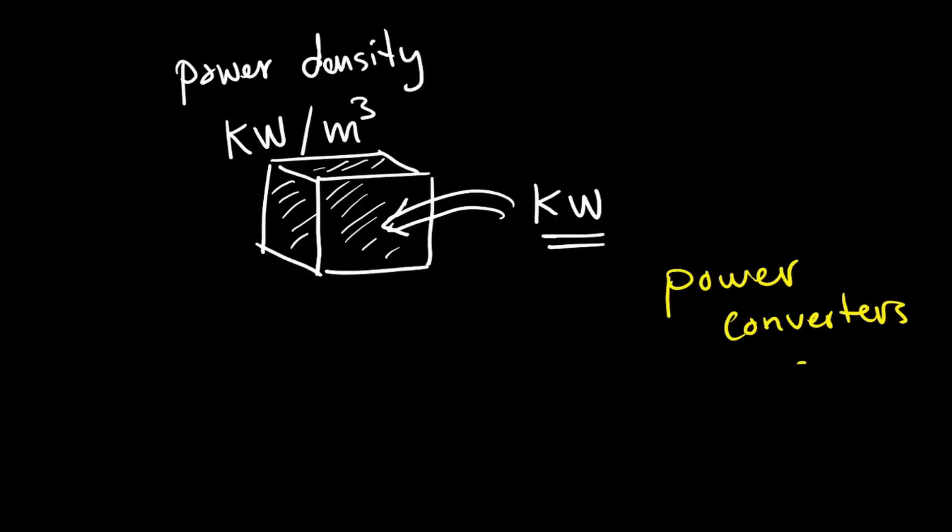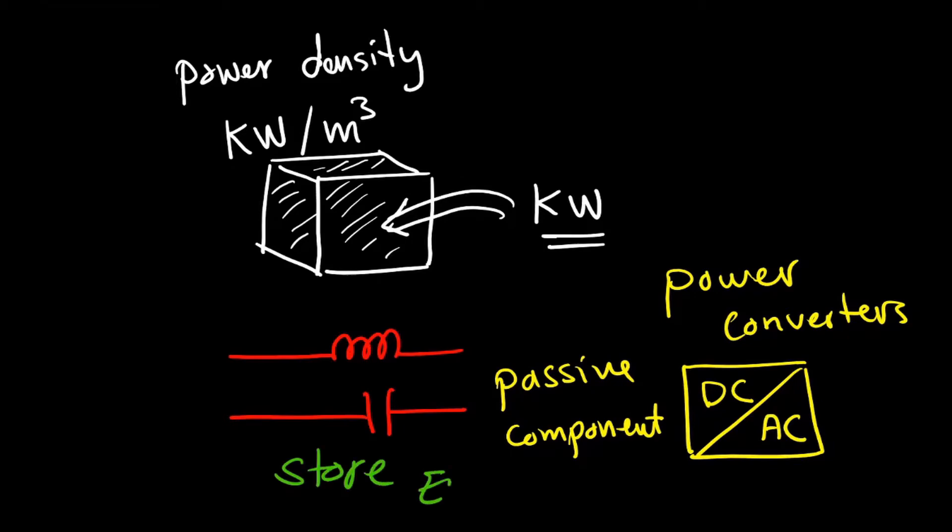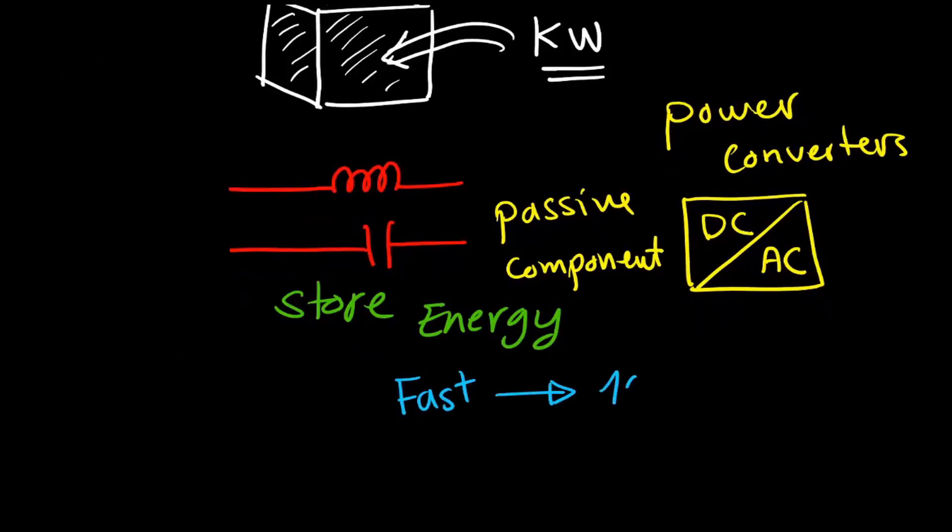Power converters used to utilize passive components to store energy, and the switching devices used to divide energy into small parts and store them inside the capacitors and inductors, and recall them when needed. And this process happens very fast.